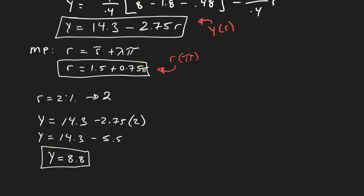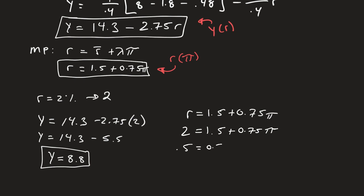We've also been asked to find the inflation rate. Now we use the MP curve: R equals 1.5 plus 0.75 times pi. We plug in R equals 2, so 2 equals 1.5 plus 0.75 pi. Subtracting 1.5 from both sides gives 0.5 equals 0.75 pi. So the inflation rate is 0.5 divided by 0.75, which equals 0.67%.